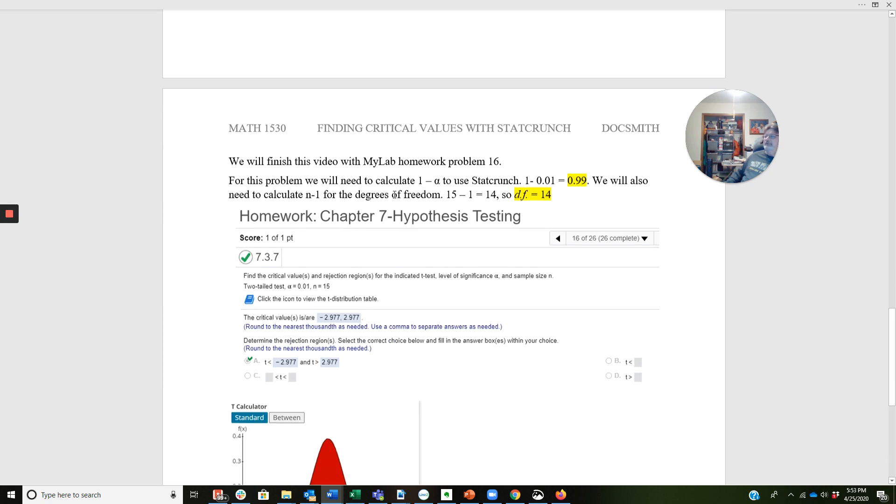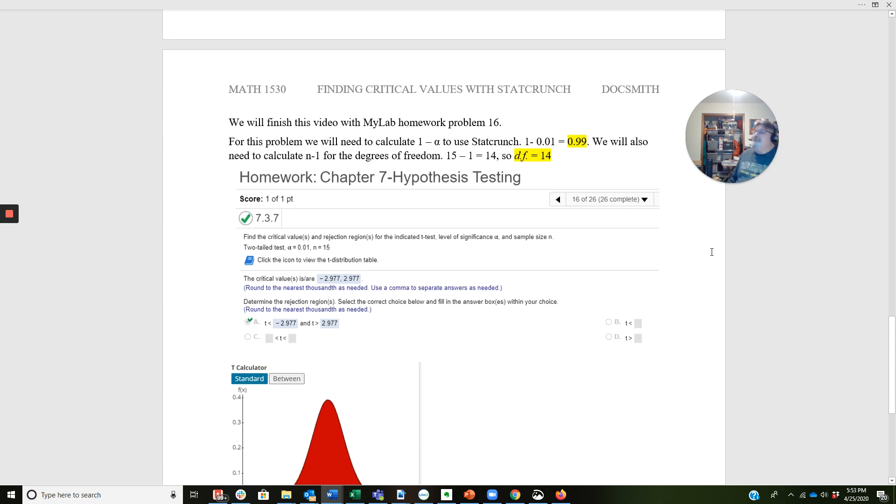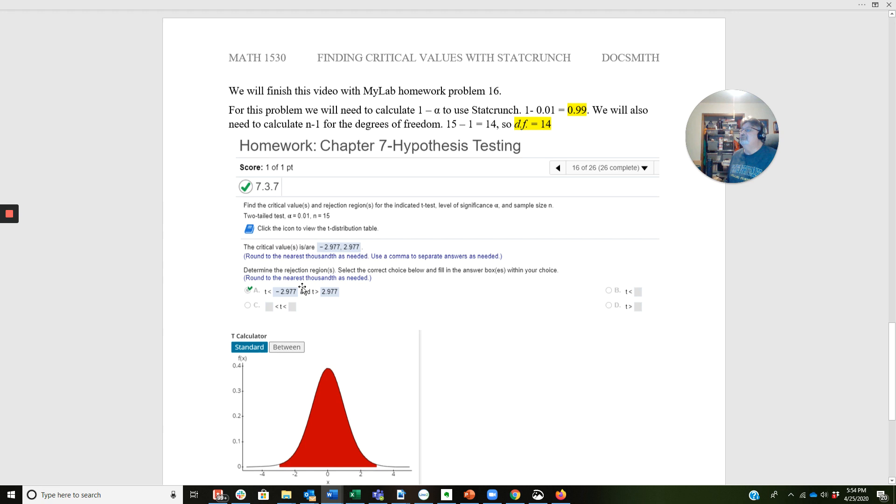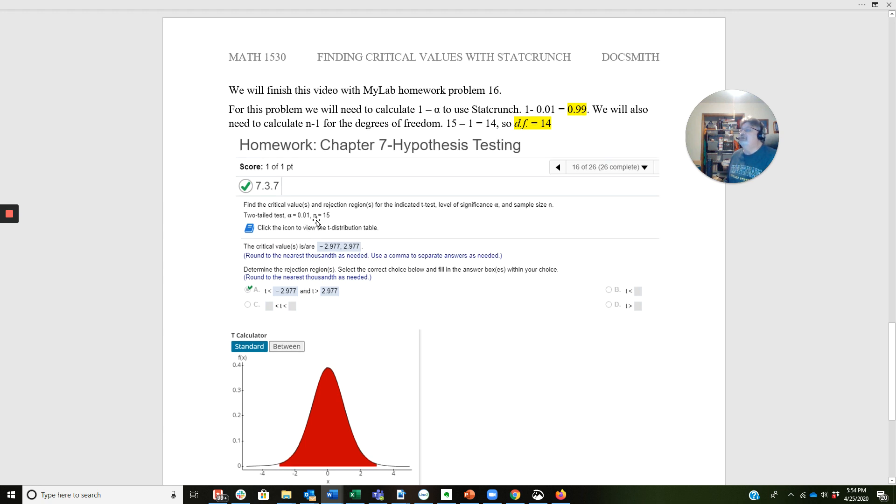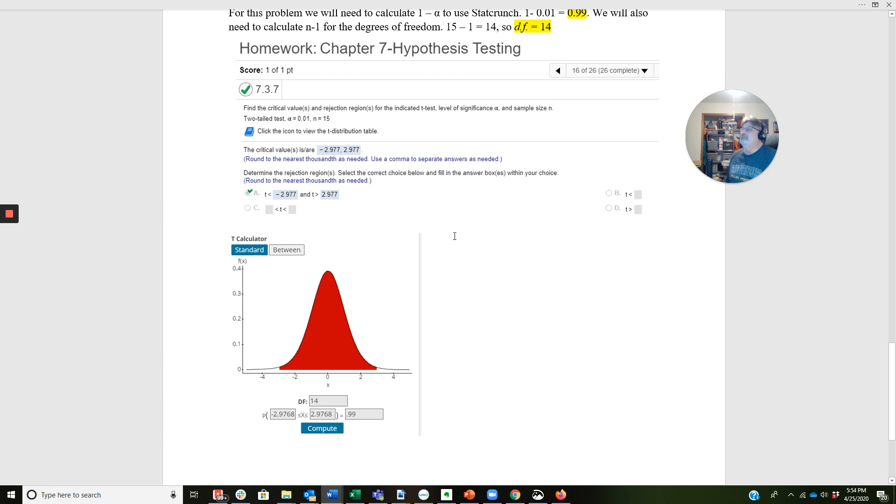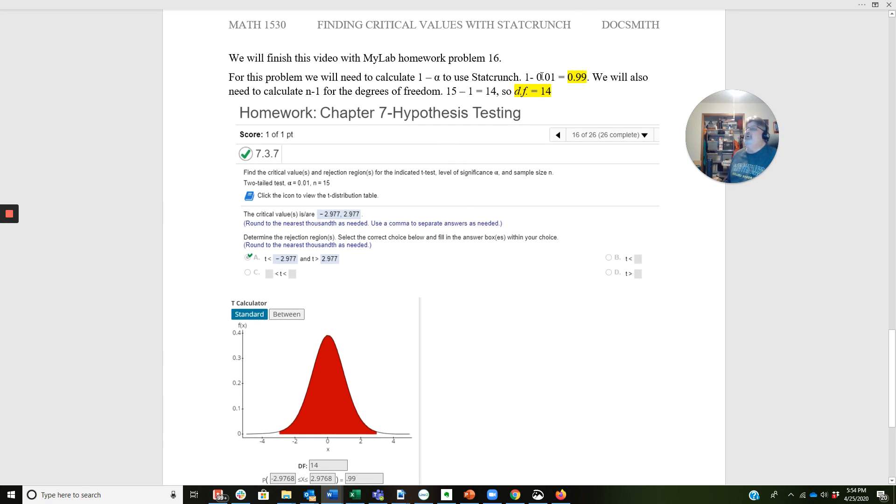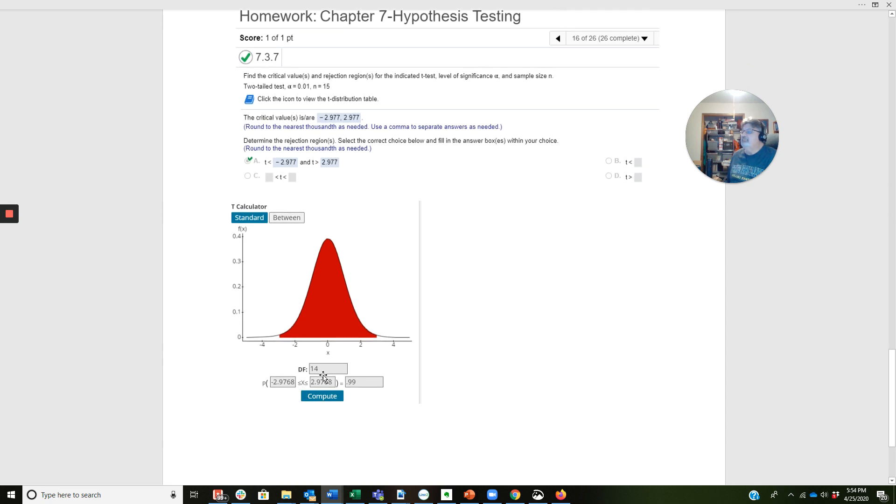This is homework problem 16. It says find the critical values and rejection region for the indicated T test, level of significance alpha and sample size n. So it's a two-tailed test, 0.01 is my alpha, N equals 15. If you'll look, when I did my calculation, I've done it up here. 1 minus 0.01 equals 0.99. I'm calculating for my n minus 1 for degrees of freedom, 15 minus 1 is 14, so the degree of freedom equals 14. I'm going to plug the 14 in here and the 0.99 in here. I get negative and click the between button up here, negative 2.9768 and a positive.